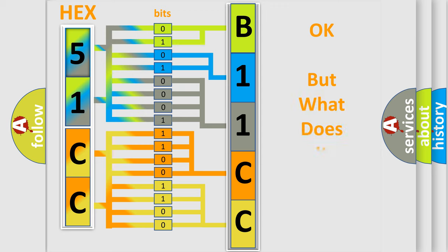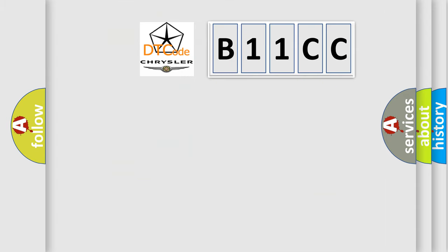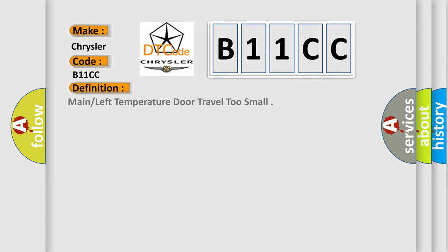We now know how the diagnostic tool translates received information into a more comprehensible format. The number itself does not make sense if we cannot assign meaning to what it actually expresses. So, what does the diagnostic trouble code B11CC interpret specifically for Chrysler? The basic definition is: main or left temperature door travel too small.